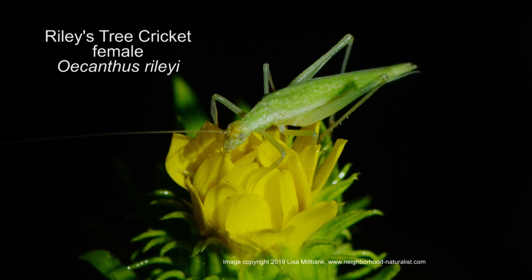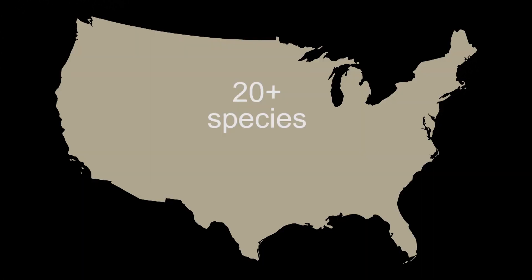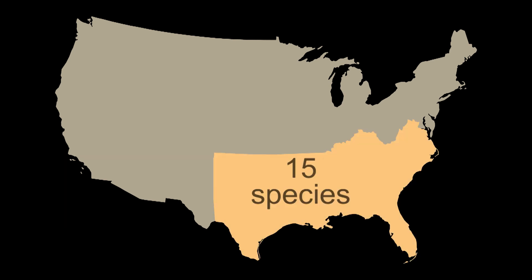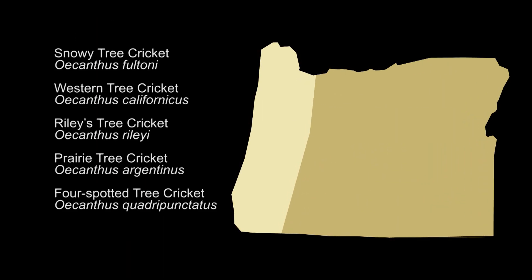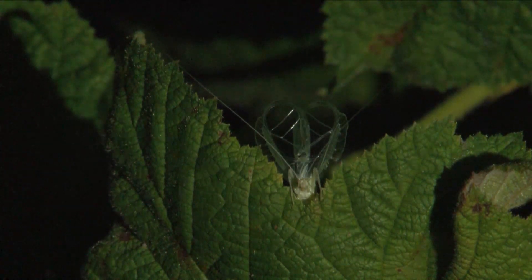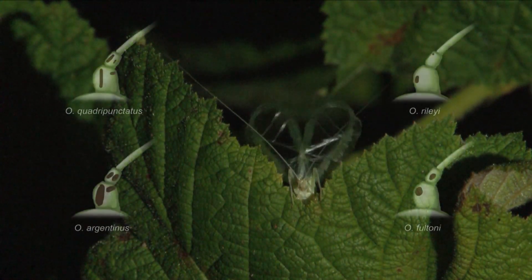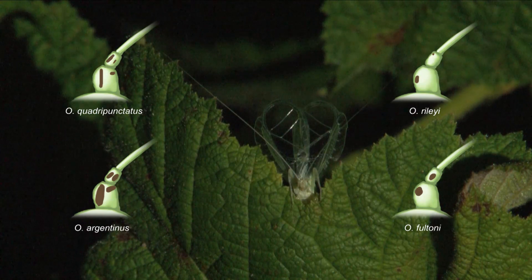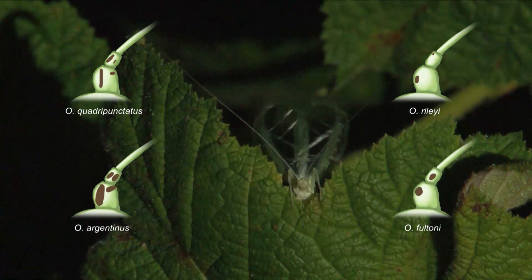Tree crickets look more like a wispy grasshopper. There are more than 20 species of tree cricket north of Mexico. The southeast U.S. has the most diversity, with 15 species. Here in western Oregon, we have five species: snowy, western, Riley's, prairie, and four-spotted tree crickets. With only a few exceptions, these tree crickets look nearly alike. Experts distinguish them by looking at tiny field marks, like the little marks on the first two antenna segments.